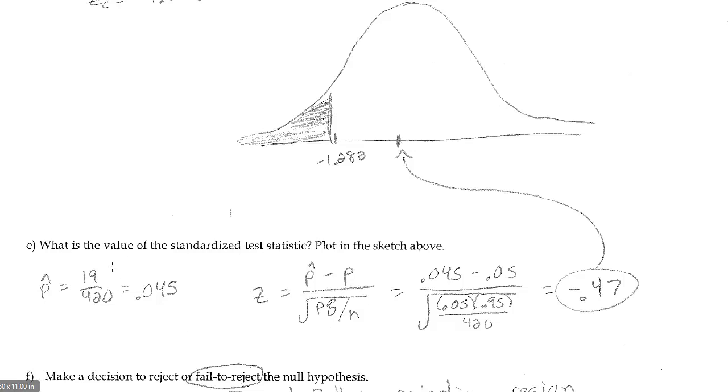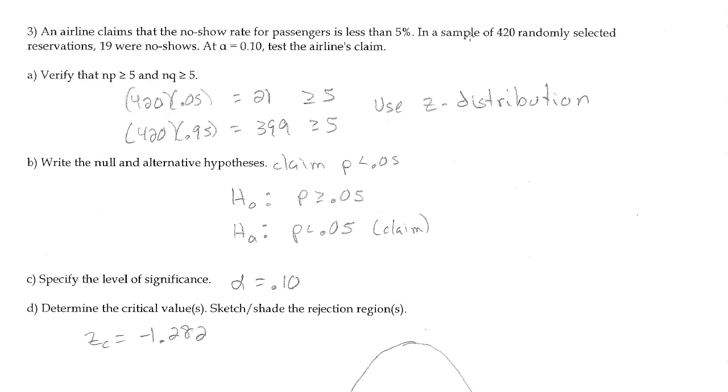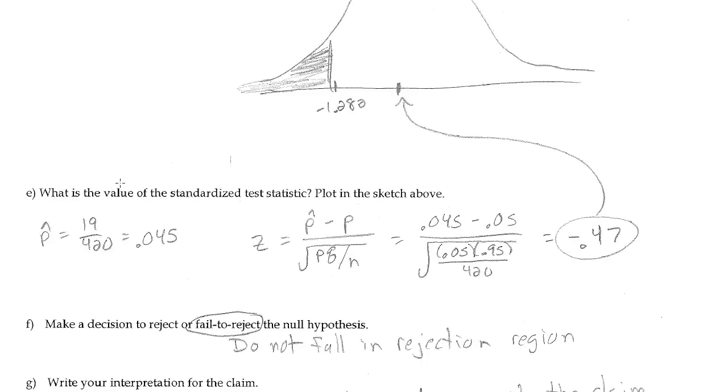For our sample proportion, the problem stated we had 19 out of 420 where in our sample. In a sample of 420 randomly selected reservations, 19 were no-shows. So that's our sample proportion of 0.045.